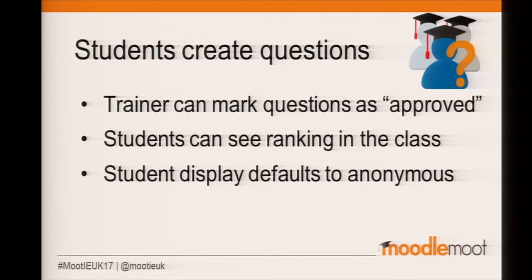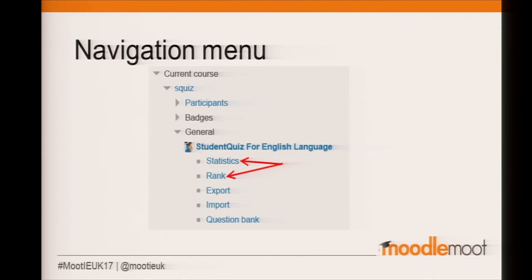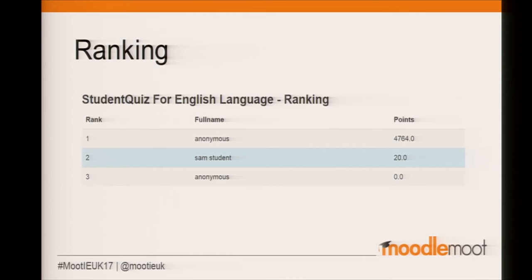A teacher can mark questions as approved. That doesn't release the question — it simply signals to students when selecting quiz questions that a teacher has looked at it and it's probably not a junk question. Students can see their ranking in the class; by default other names are anonymized, although you can turn that off. This is a navigation menu with statistics and rank. It works in 3.2 and with Boost-style themes. The reason 'anonymous' at the top got so many marks is because that's me — I imported lots of questions from an XML file.